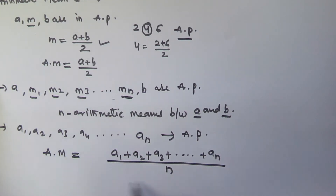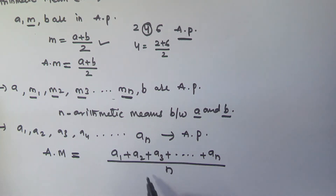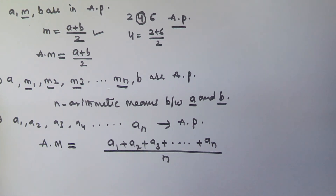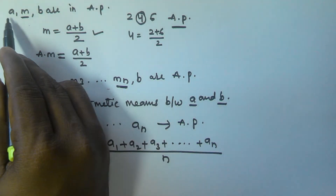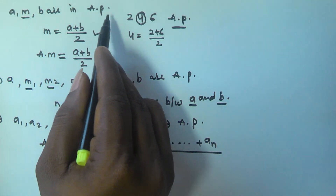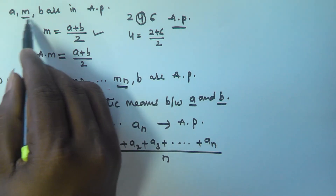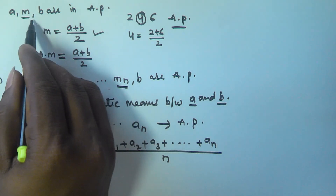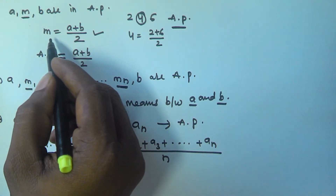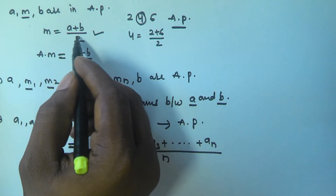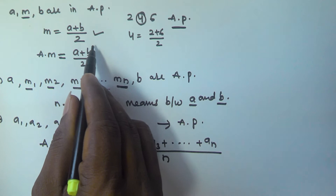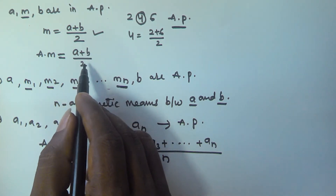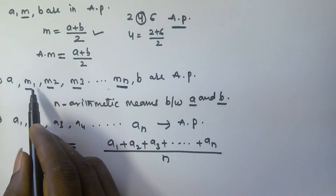So to recap: if a, m, and b are in arithmetic progression, then the middle number m is called the arithmetic mean, and it is given by m = (a + b) / 2. So the arithmetic mean of two given numbers a and b is (a + b) / 2.